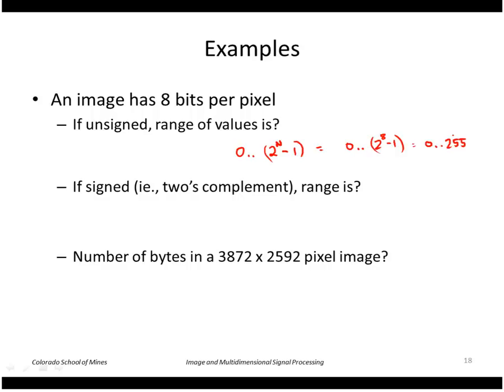Two's complement numbers: recall that a two's complement number uses half the range for the negative and half the range for the positive. So in this case it would be minus 2 to the n minus 1, to plus 2 to the n minus 1, minus 1. So that is minus 128 to plus 127.